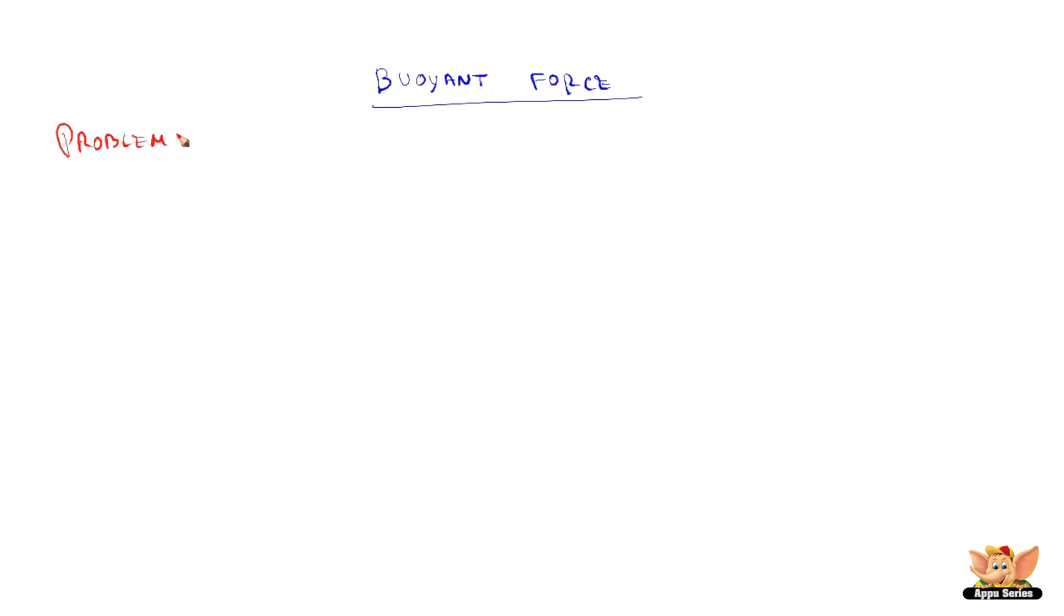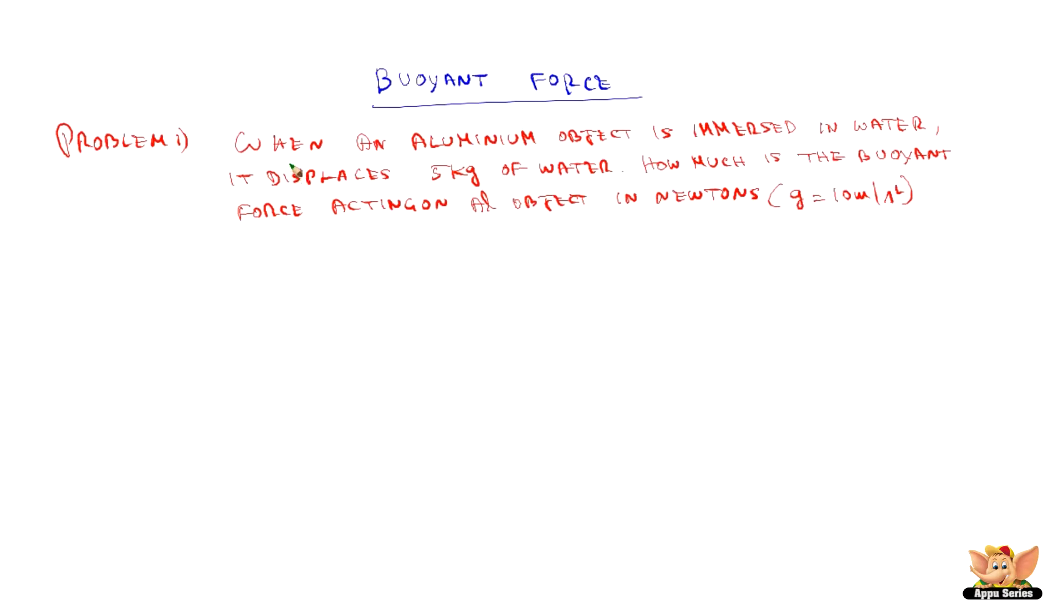Problem 1: When an aluminum object is immersed in water, it displaces 5 kg of water. How much is the buoyant force acting on the aluminum object in Newtons? Take g as 10 meter per second square.